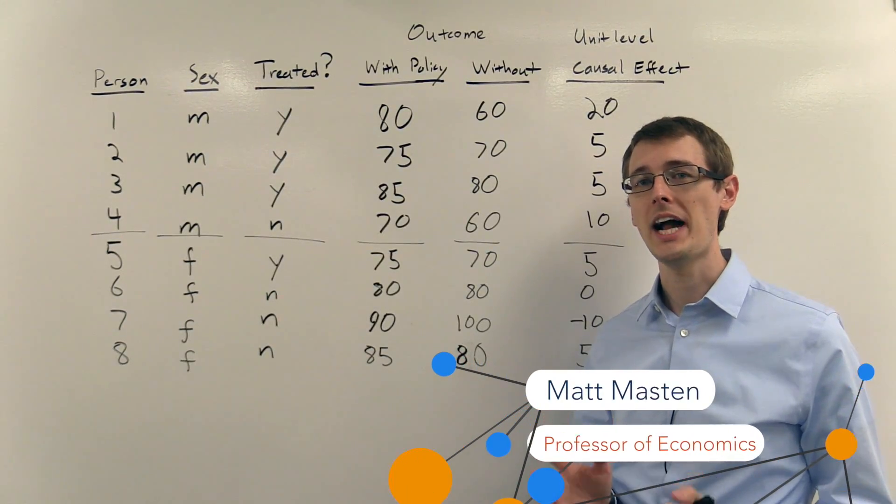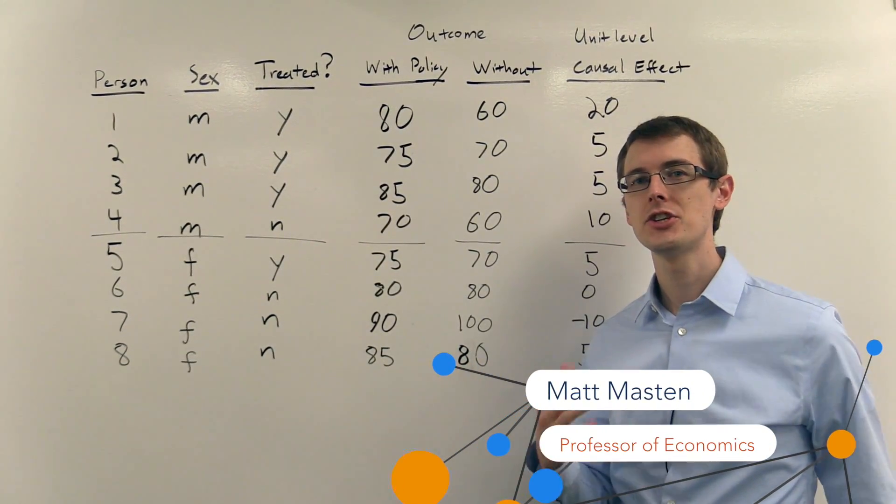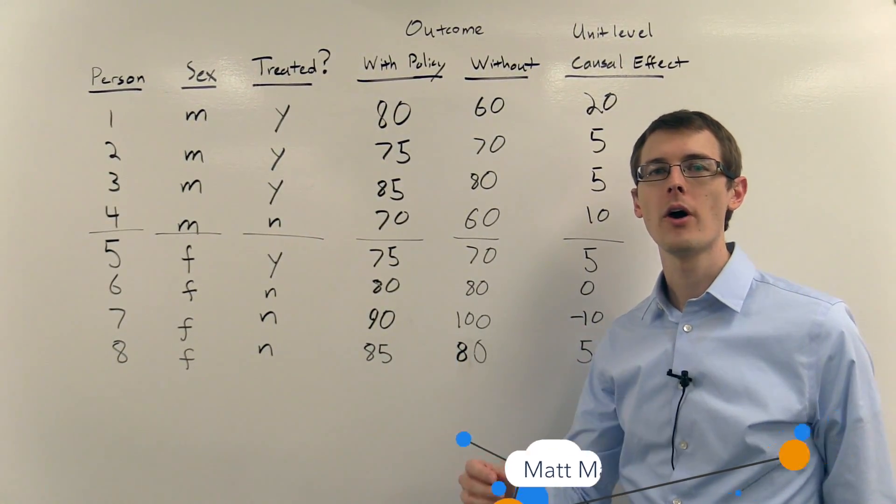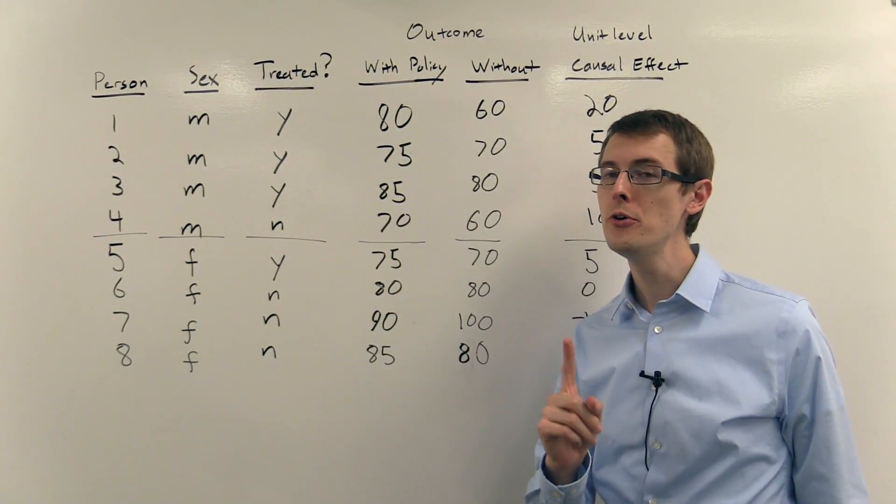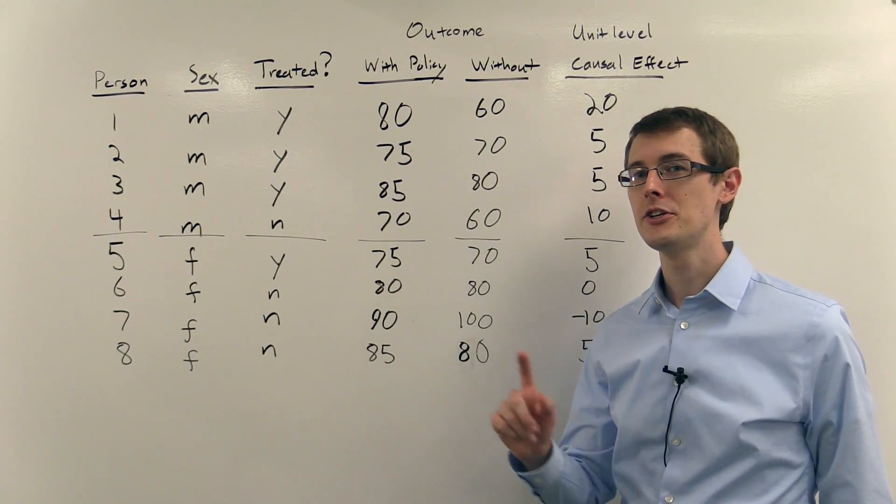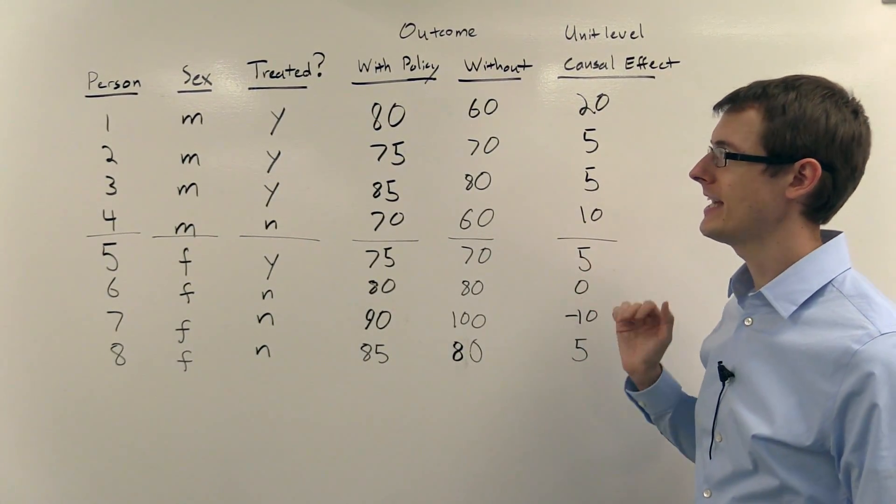Remember CATE, the conditional average treatment effect. This is just the average effect for a subset of units. Now I'm going to introduce a new kind of average effect, and to do that I've got a table with eight data points.